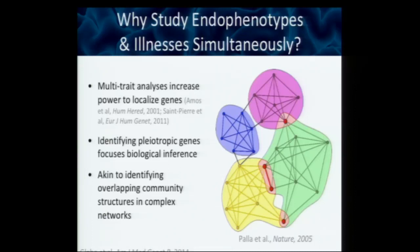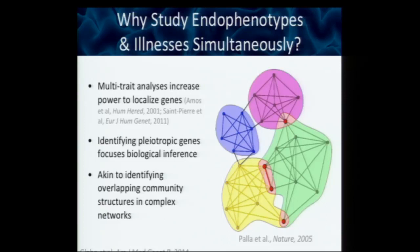It's possible that identifying pleiotropic genes focuses our biological inference. If a gene influences both RNF-123 and risk for major depression, you have the beginnings of a pathway from the genetic component to the biology. I think of it as akin to identifying overlapping community structures in complex networks. There's a paper by Palla et al. from Nature in 2005 — two Czech physicists who mathematically modeled how when you have two complex networks, points of overlap can be seen fundamentally. This paper has been cited almost 10,000 times and solved a problem with cell phone reception. This type of math will become useful for disentangling complex genetic architectures of mental illnesses and endophenotypes.